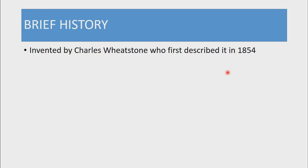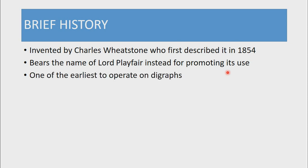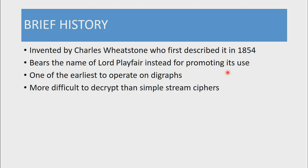The Playfair Cipher was invented by Charles Wheatstone, who first described it in 1854. However, it bears the name of Lord Playfair instead for promoting its use, and that's why it is known as the Playfair Cipher. This encryption mechanism is one of the earliest to operate on digraphs — a digraph is simply a pair of letters, which means that the Playfair Cipher will encrypt pairs of letters at a time.